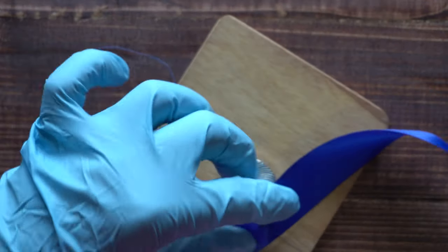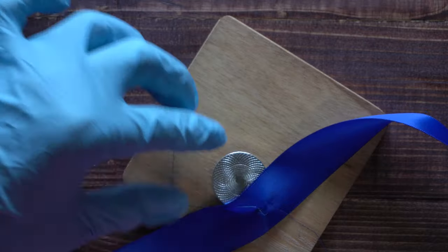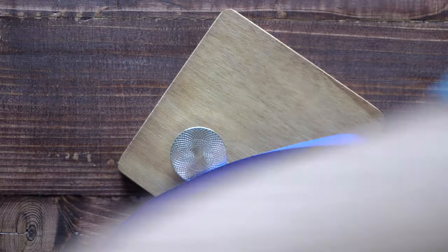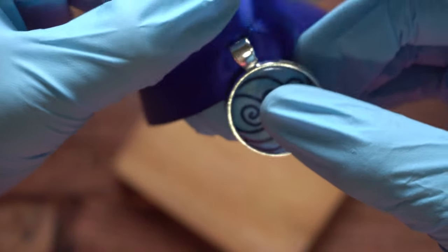Now you can go ahead and cut off the extra string. Then you can add a dab of hot glue to protect the extra string on the back.